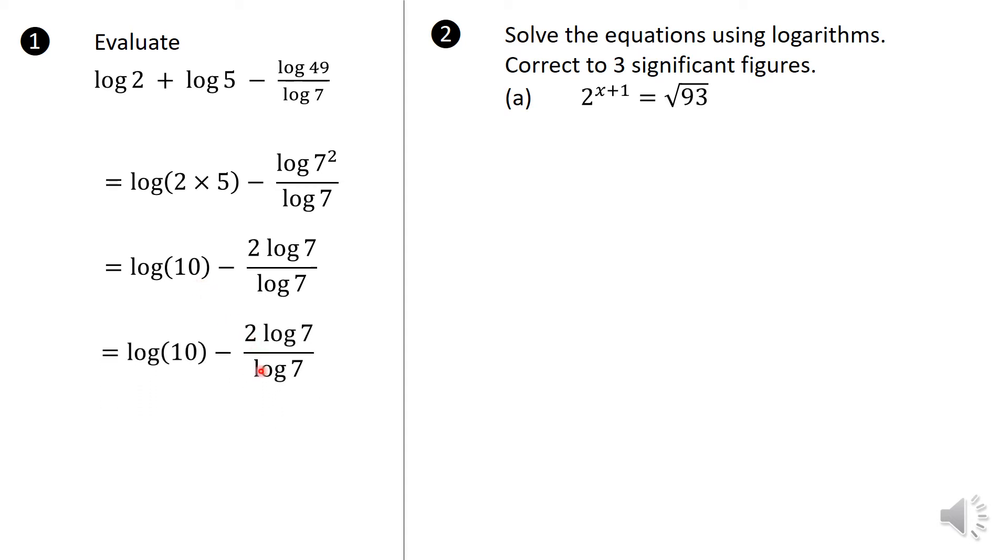Of course, you should know this. So first of all, the 7s, they cancel. Log 7, log 7, leaving us with that 2 that's there. And this is log base 10 of 10, which just becomes 1. And of course, this is 2 on this side. So 1 minus 2 gives us this answer as negative 1.